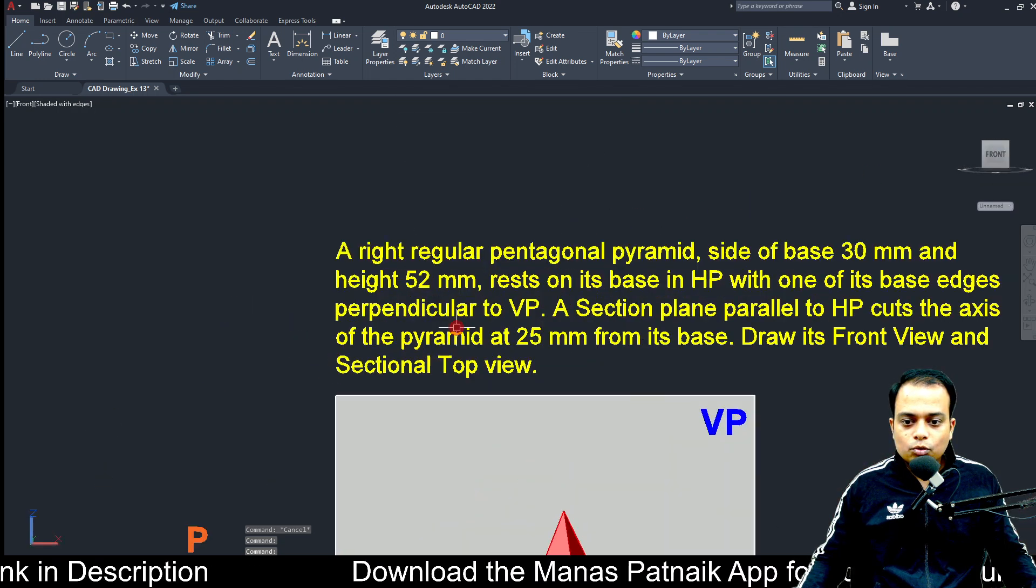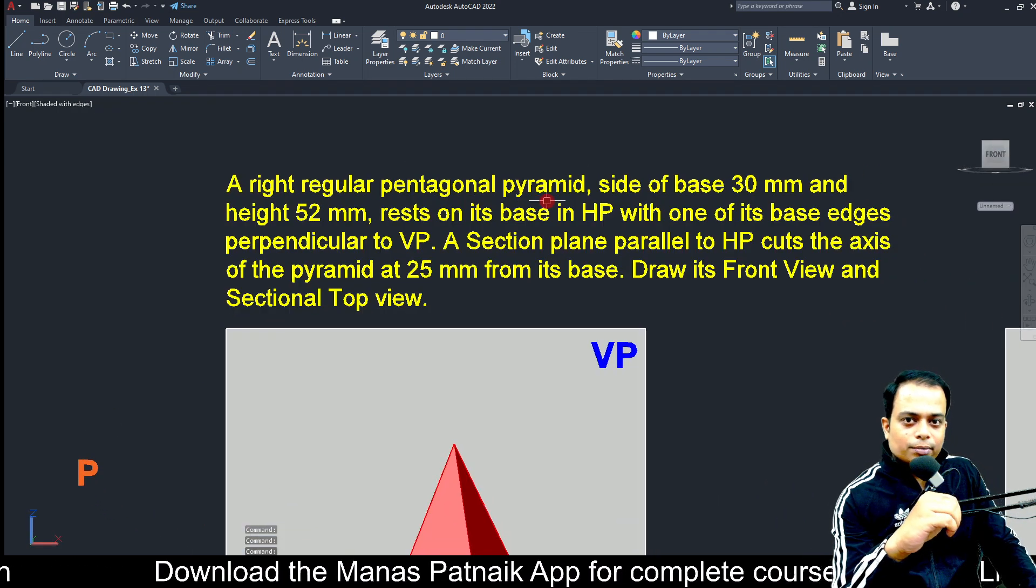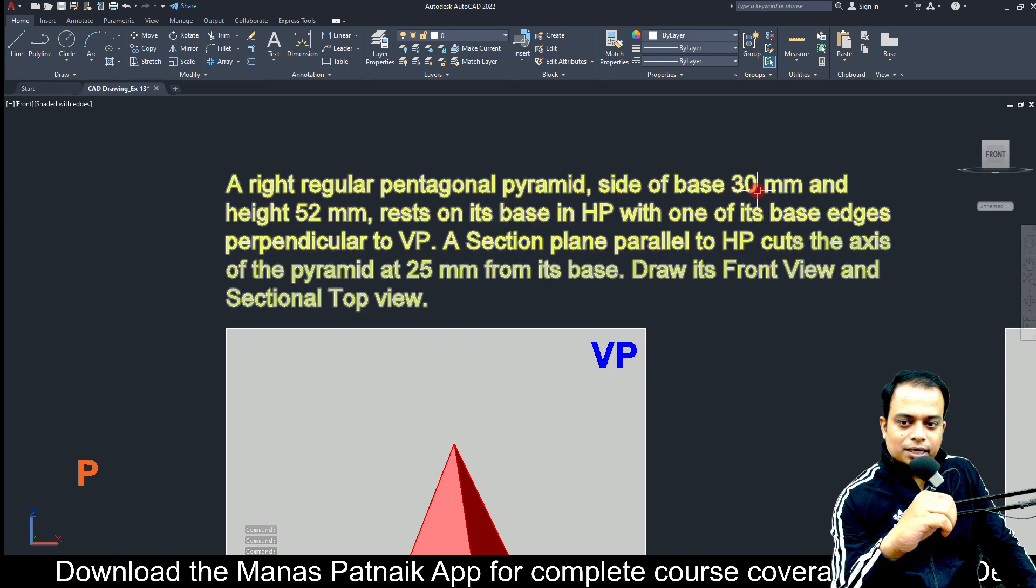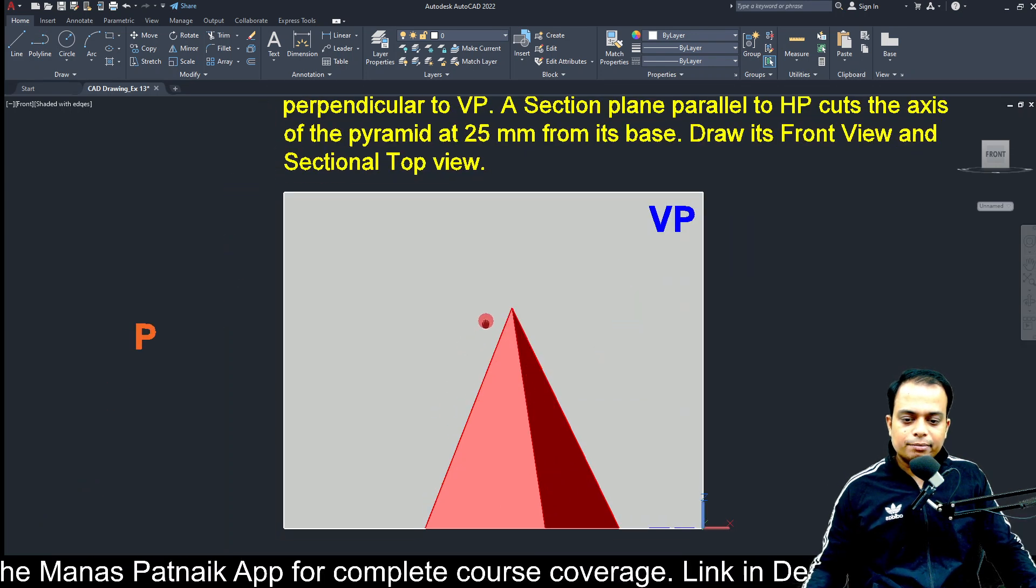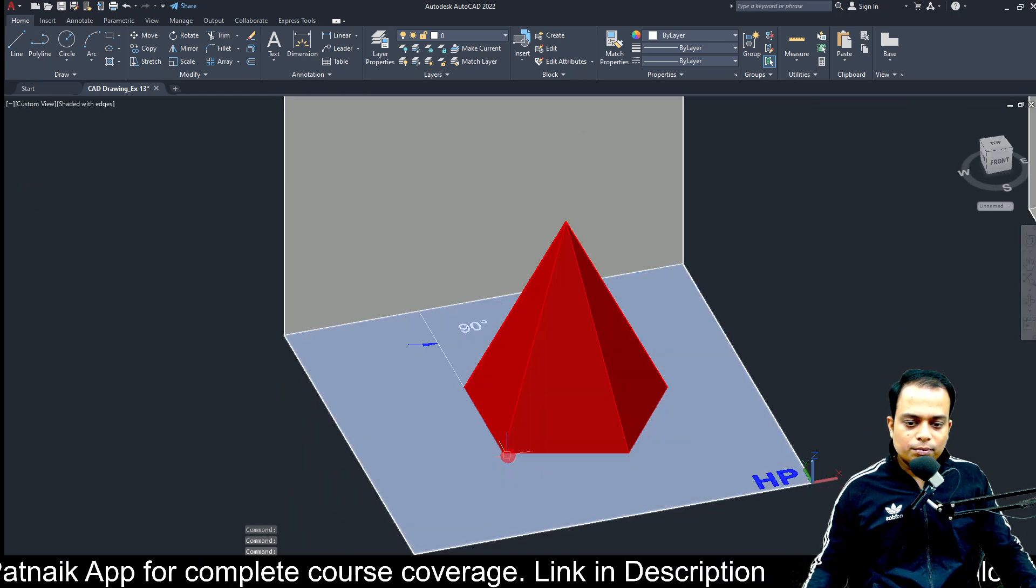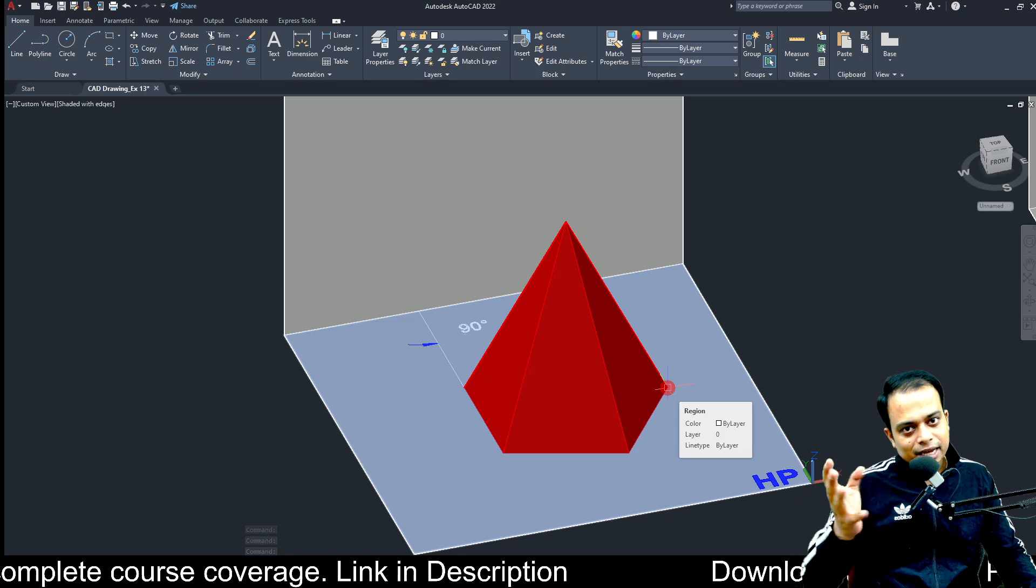Let me read the problem description. We are talking about a pentagonal pyramid whose base is 30 mm and height is 52 mm.